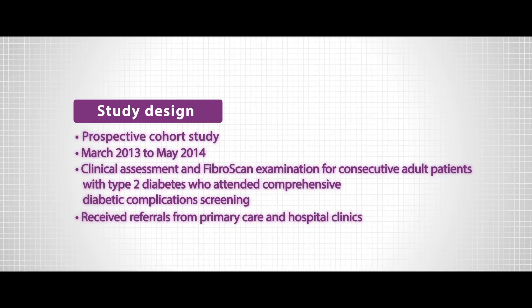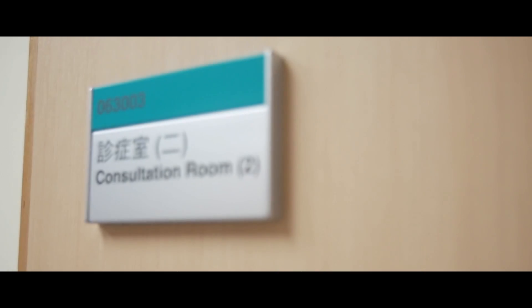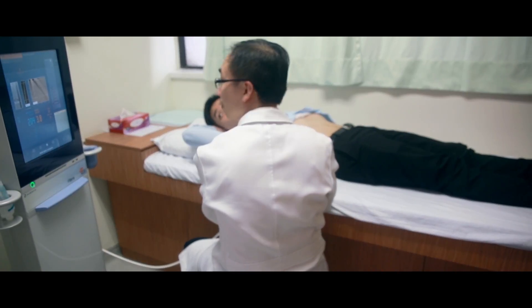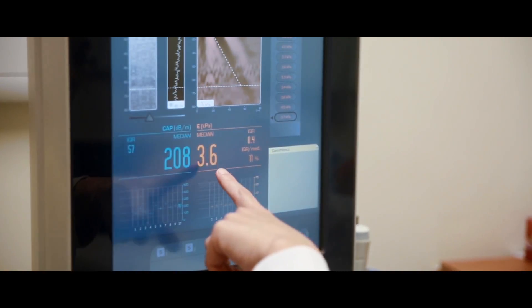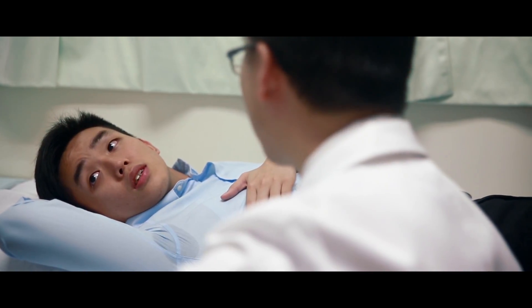To resolve this controversy, we decided to conduct our study. From 2013 to 2014, we used transient elastography to screen more than 1,900 patients with type 2 diabetes. Using controlled attenuation parameter and liver stiffness measurement, as well as the M-probe and the XL-probe, we were able to estimate liver fat and fibrosis in more than 90% of the patients.